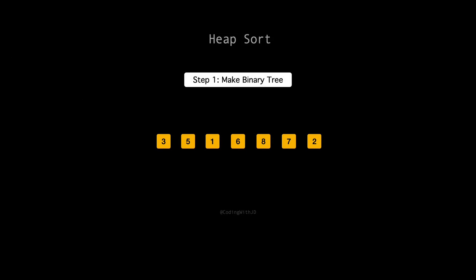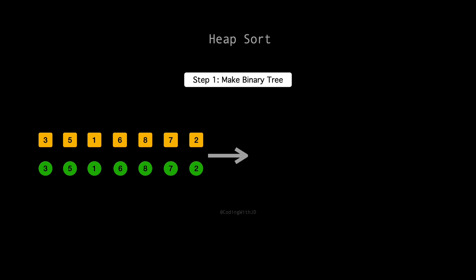Step 1, we start by arranging our array into a binary tree. We place each element following the order they appear in the array, ensuring every parent node has at most two children.